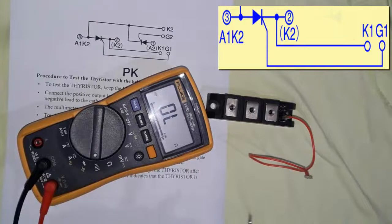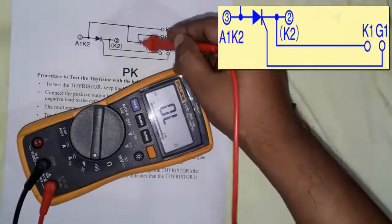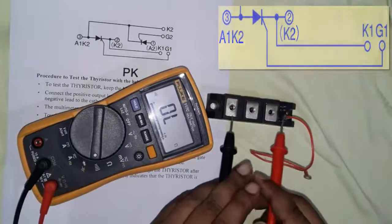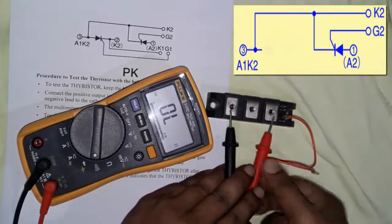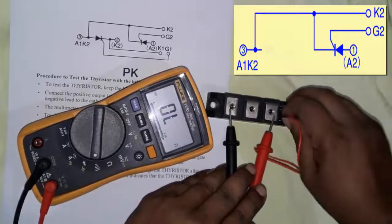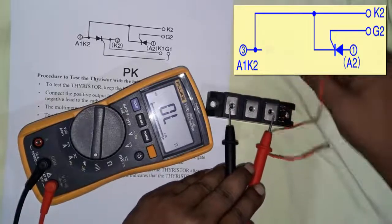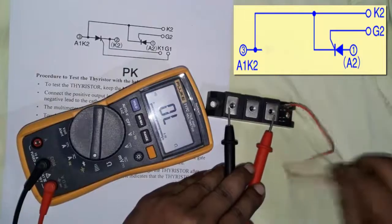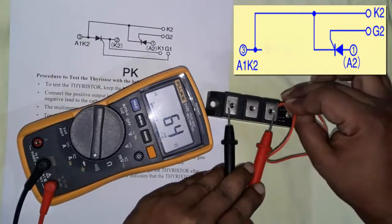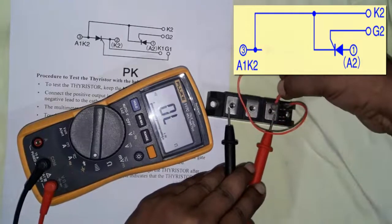Now we're testing the second thyristor. Terminal one gets the red probe for anode and terminal three gets the black probe for cathode. When we touch gate two with the anode, it shows continuity.